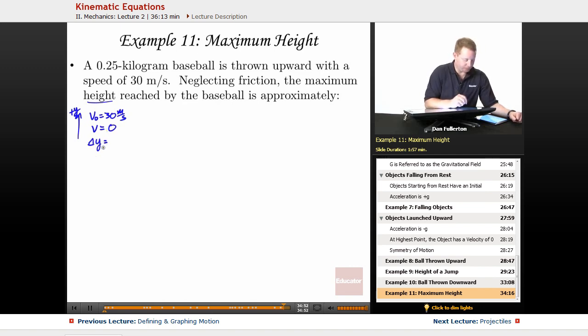We're trying to find delta y. Acceleration is negative 10 meters per second squared. Negative because we called up positive if the acceleration due to gravity is down. And we don't know time.